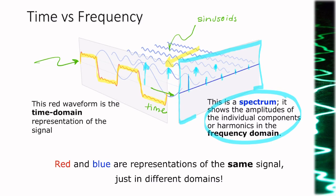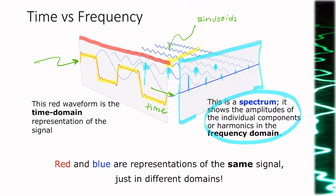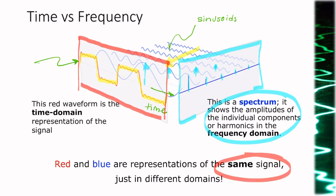These two views — whether the red or the blue — represent the same signal, just two representations: one in time and one in frequency. We can move between one representation and the other; sometimes one is more useful than the other. This is just to give you an overview — don't worry too much about this diagram, it's only here to make things clearer.